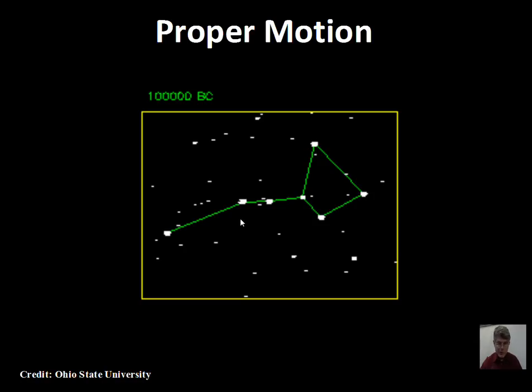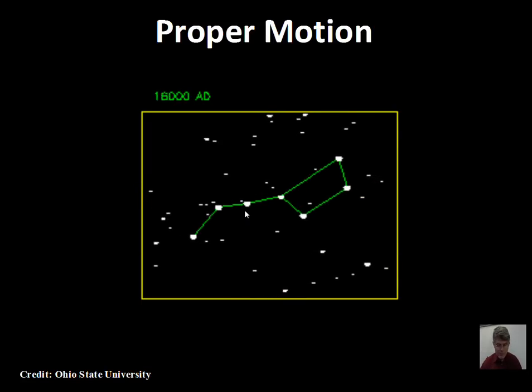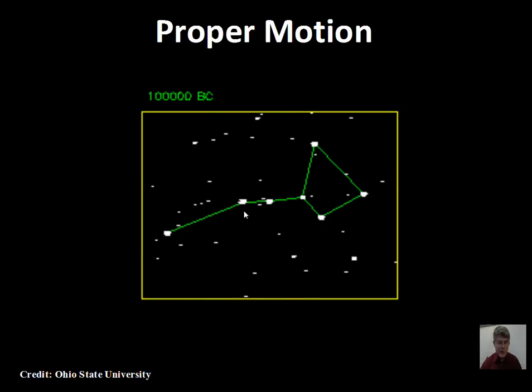Proper motion is sideways motion. Doppler shift cannot measure that. Doppler shift gives us the speed of the star towards us or away from us. The proper motion tells us information about the sideways motion of a star on the sky. I hope you enjoyed that. You can see some other of these on YouTube, but keep reading and ask some questions.